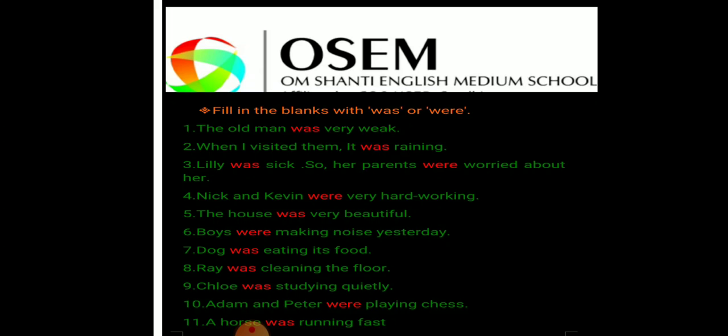Seven: Dog was eating its food — dog, singular noun, that's why was. Eight: Ray was cleaning the floor — Ray, singular noun, that's why was. Nine: Calloy was studying quietly — singular noun, that's why we have to use was. Ten: The other man and pet — two persons — plural noun, that's why we have to use were.